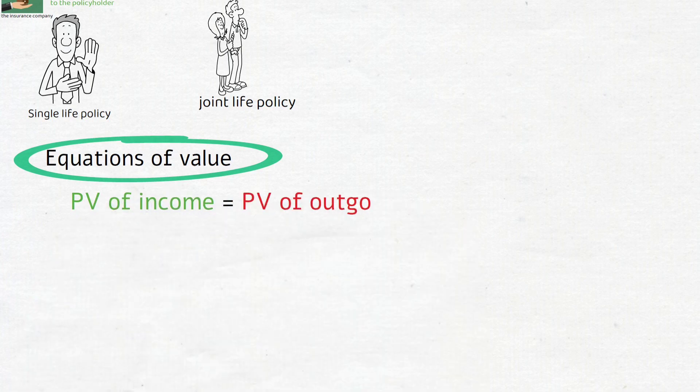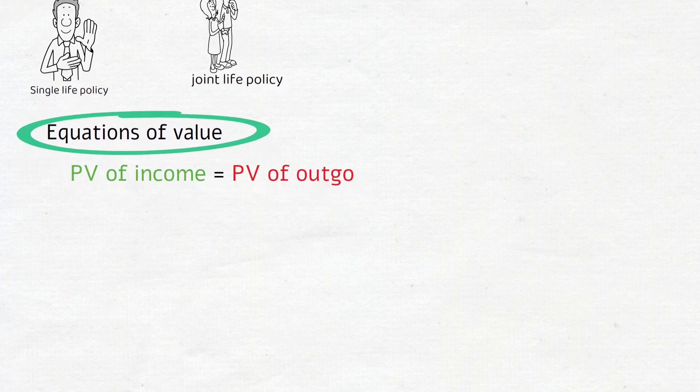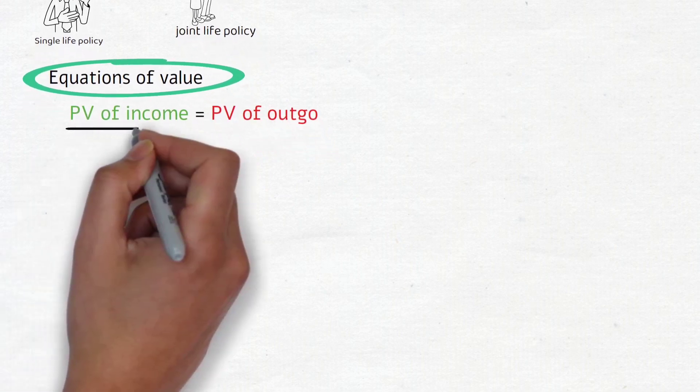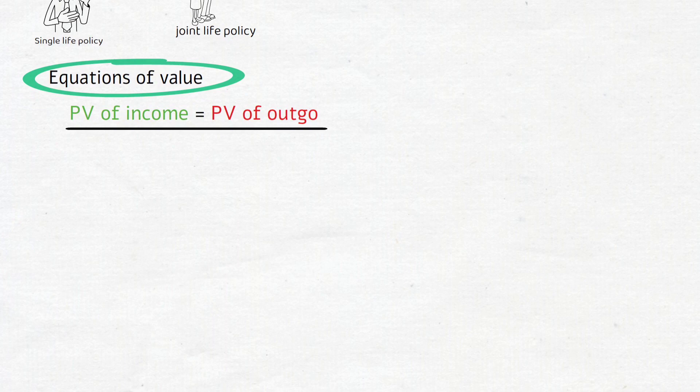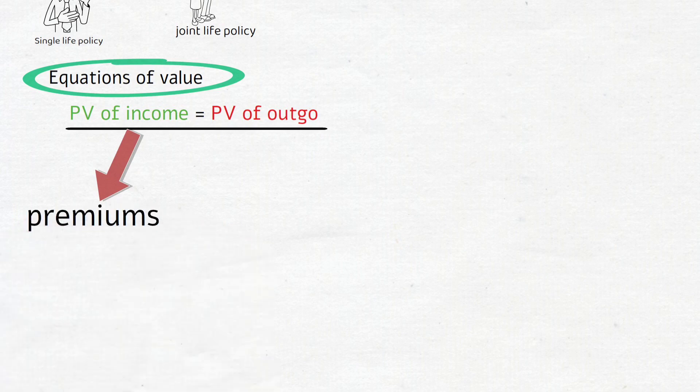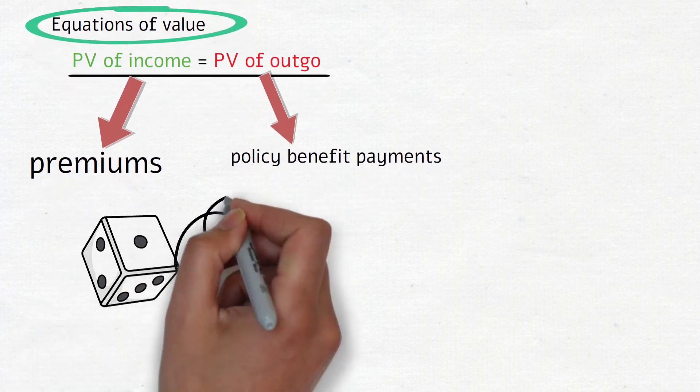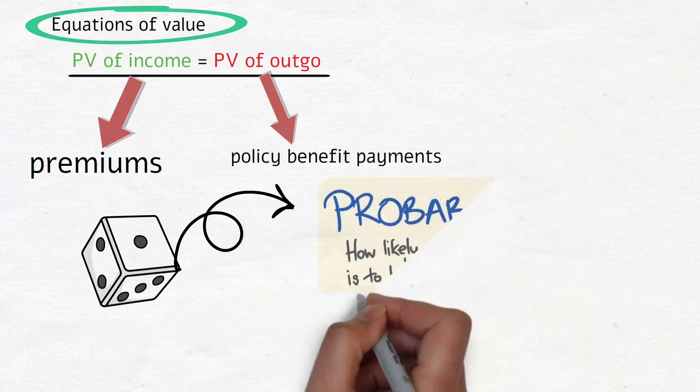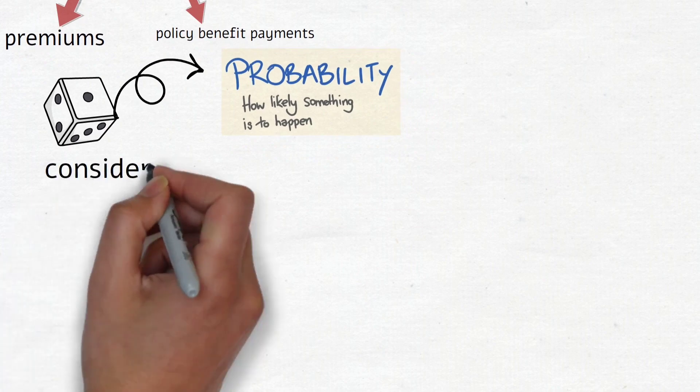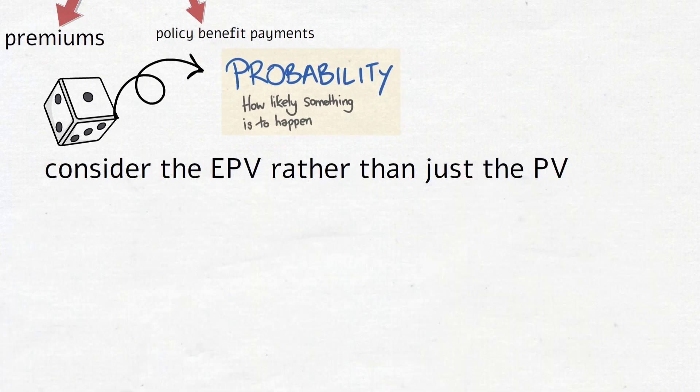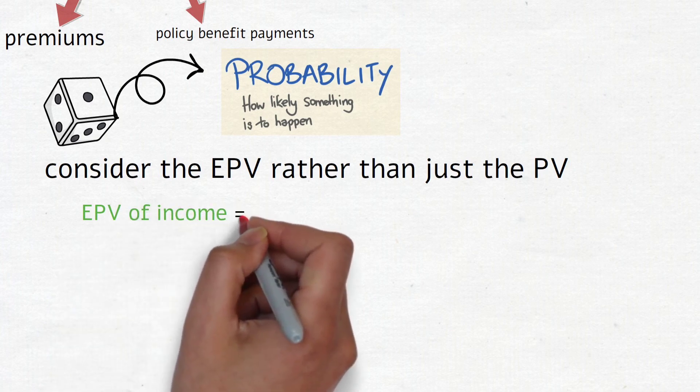A standard equation of value is that the present value of income equals the present value of outgo. From the point of view of an insurance company, income usually is in the form of premiums and outgo is in the form of policy benefits paid to policy holders. Since these cash flows are not certain to occur, we need to consider the probability of them occurring. So to do this we must consider the expected present value rather than just the present value. The equation of value then becomes: the expected present value of income equals the expected present value of outgo.